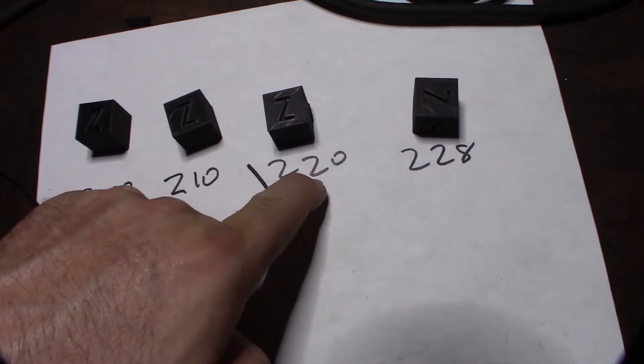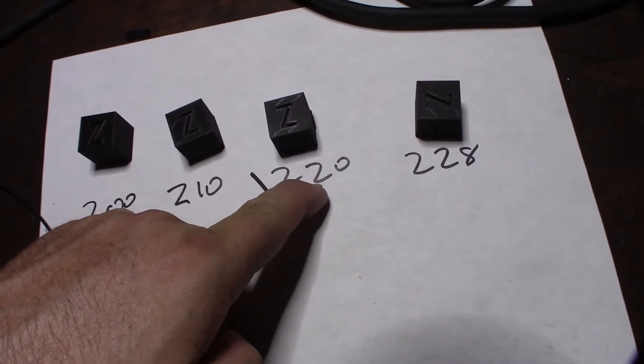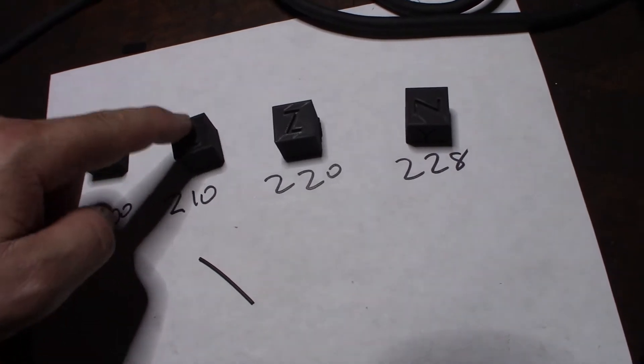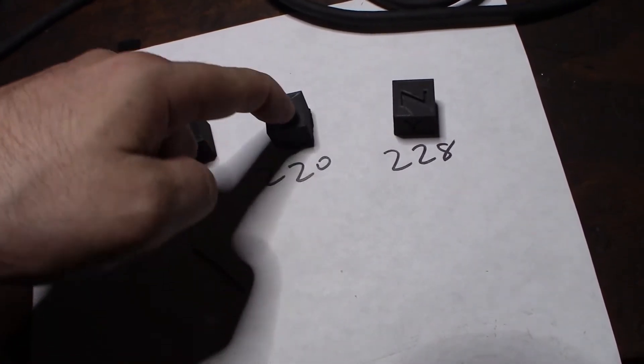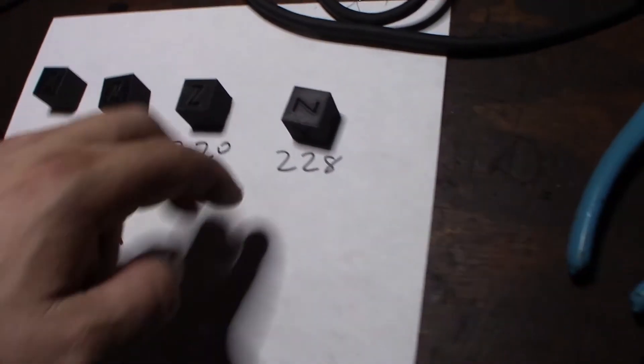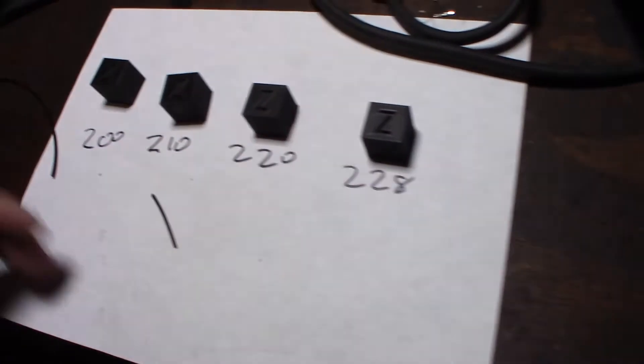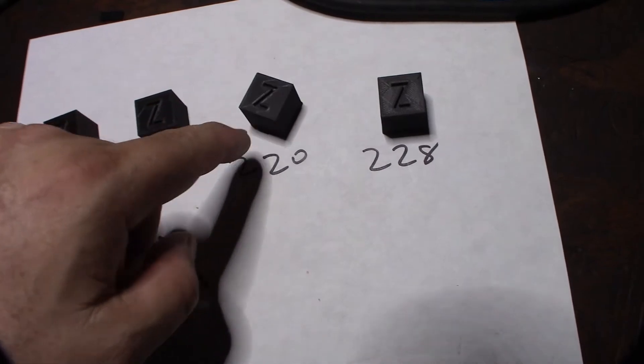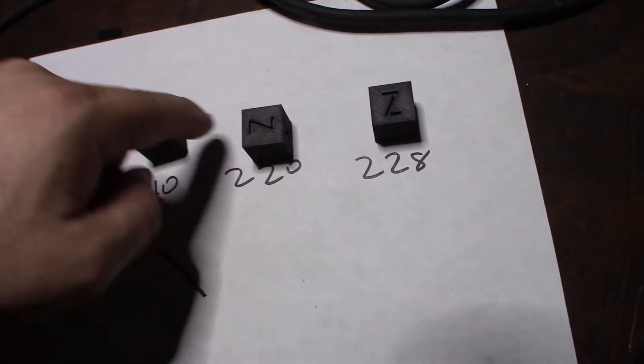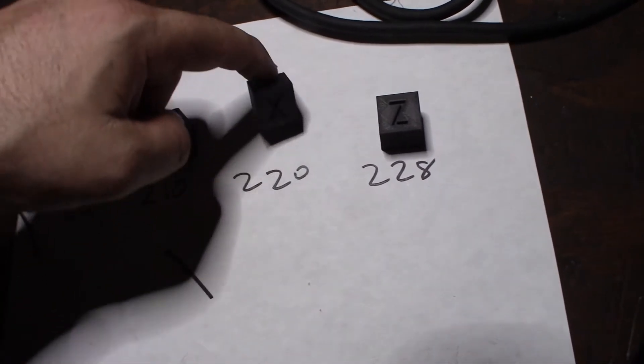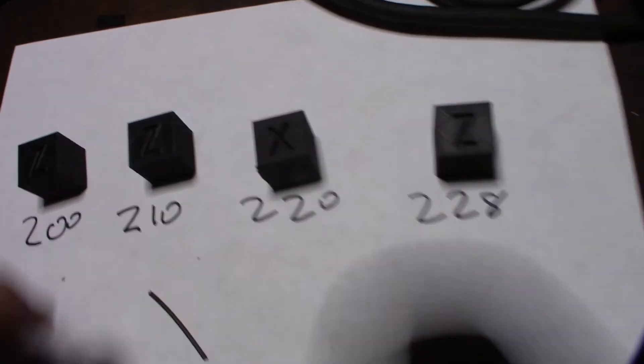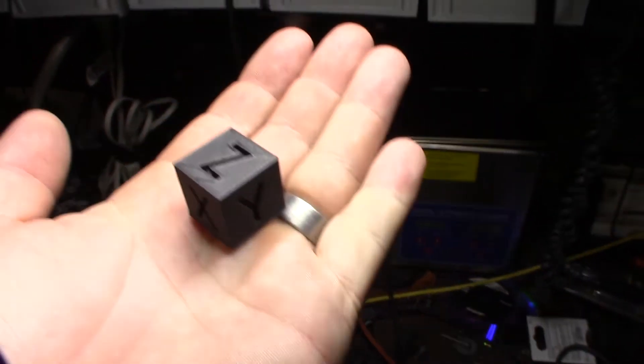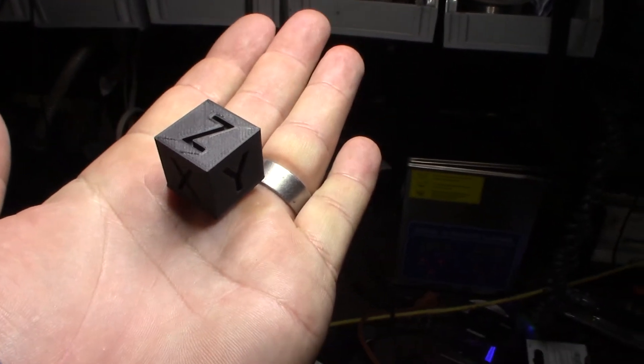So but for my printer, I'm running a printer bot Simple Metal with the E3D Clone Hot End with the steel tip. And 220 was the best for my printer. So but I'm sure it's going to be different for other people's printers. But awesome, awesome filament. I mean, this is probably, this is the highest quality thing I've ever printed out of that printer. When it comes to detail, I mean, look at that. Put that in the mirror light again. I mean, look at that. Look how sharp that Z is. That's incredible.